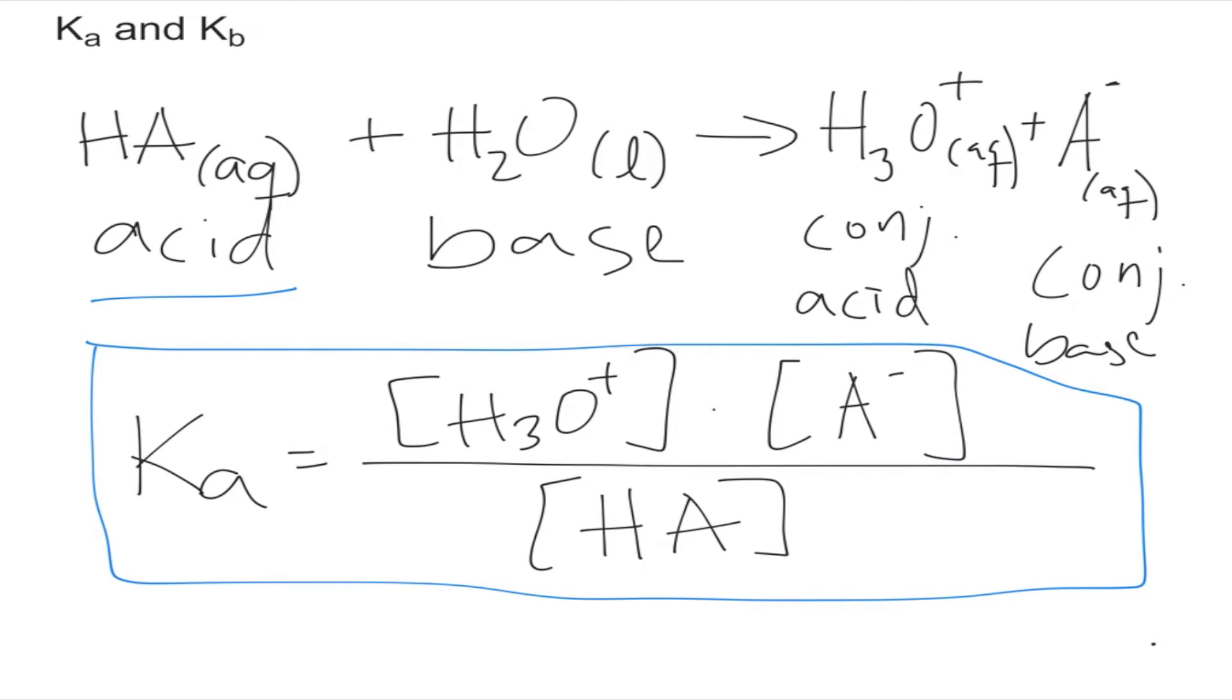Again, I like to label everything I have in my equation because HA is an acid and water we know is amphoteric, so it can be an acid or a base. Depending on what you start with, you will know if you have to find the Ka or the Kb. If we started here with a base instead of the acid HA, we would be finding the Kb, and that makes a big difference. This Ka represents the specific acid dissociation constant of this acid HA.